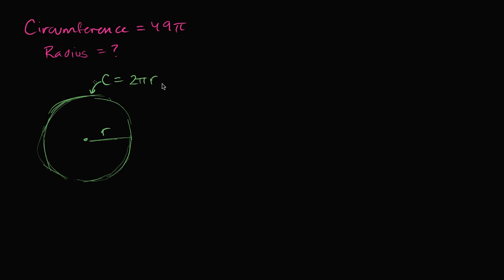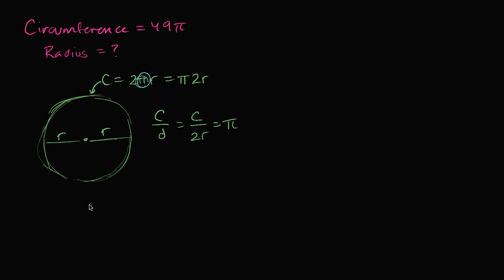The number pi — the standard definition for it is just the ratio between the circumference and the diameter of a circle. If the diameter is two r, we see that the circumference is pi times two r. So the ratio between the circumference and the diameter — that's the ratio between C and two r — is just going to be pi.